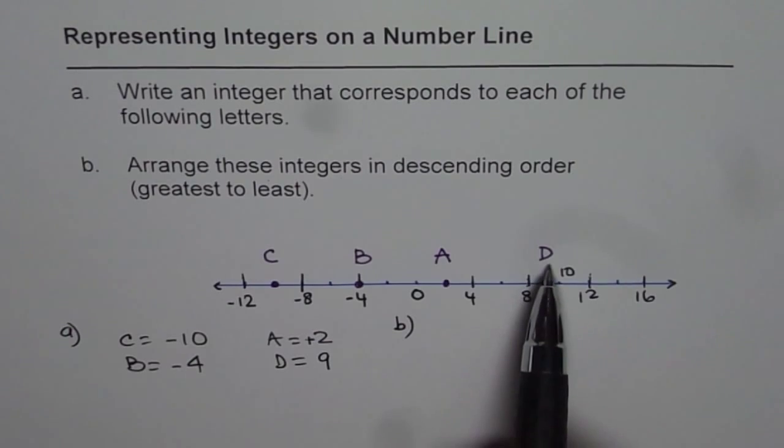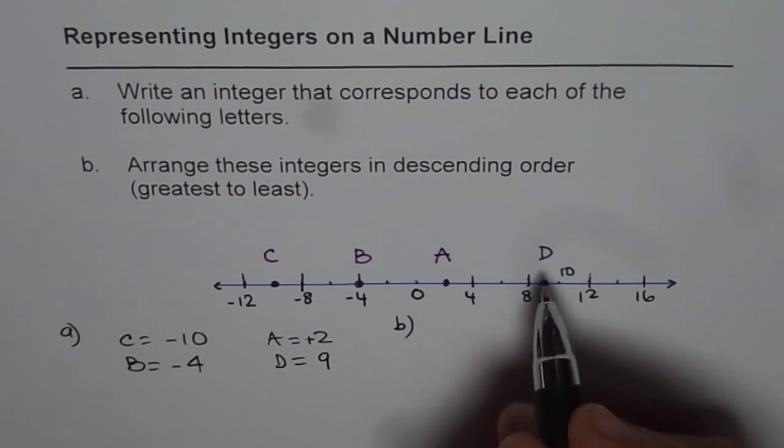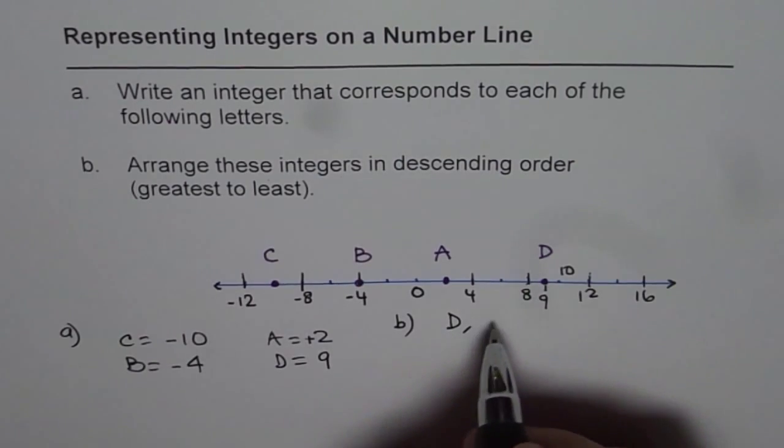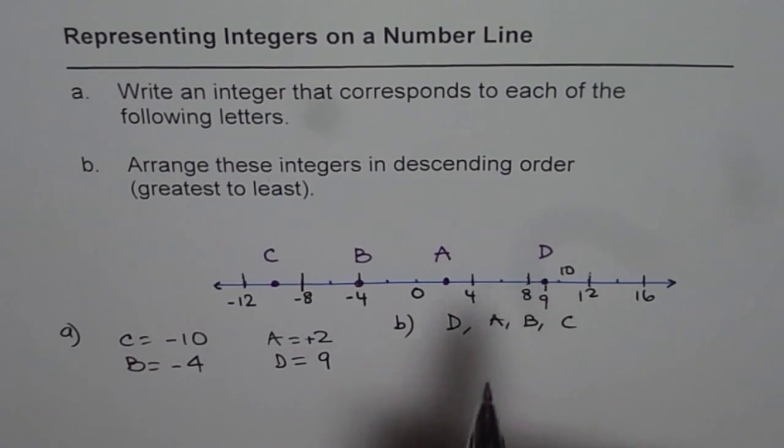Numbers on the right are greater and therefore D is the greatest. So it goes straight away right from here as D, A, B and C.